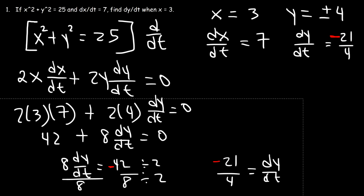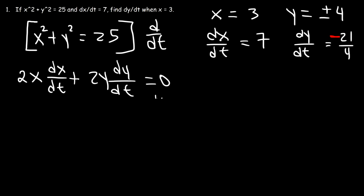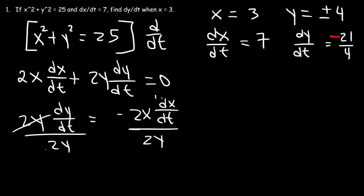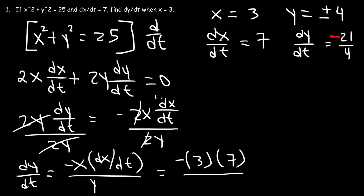Now, let's see what's going to happen when y is negative 4. So this time, I'm going to solve for dy dt. So let's take this term, move it to the other side. So I have 2y, dy dt on the left, or on the right, negative 2x dx dt. So now, let's divide both sides by 2y. So dy dt will equal, the 2s will cancel. So it's going to be negative x times dx dt divided by y. So x is still positive 3, dx dt is 7, and y this time is negative 4. 3 times 7 is 21. And negative 21 divided by negative 4 is positive 21 over 4. So the magnitude is the same. The only difference is, the sign is different. So when y is positive 4, dy dt is negative 21 over 4. And when y is negative 4, dy dt is positive 21 over 4.